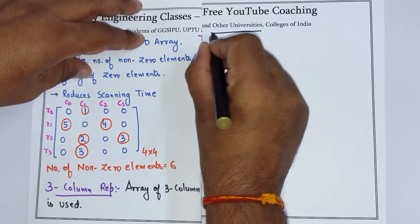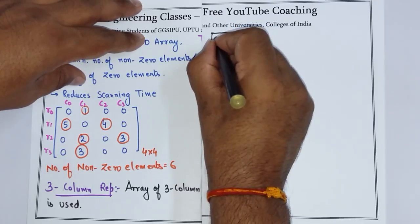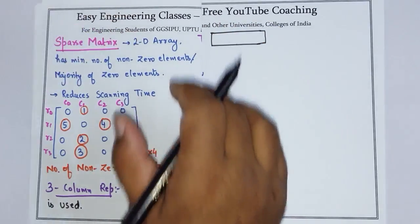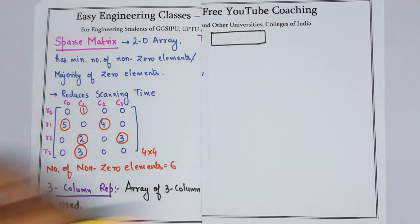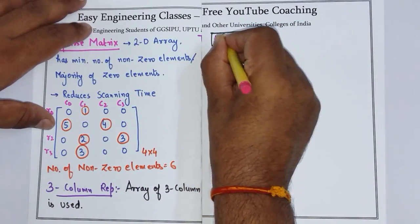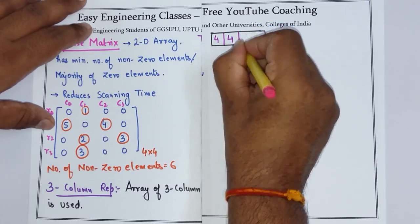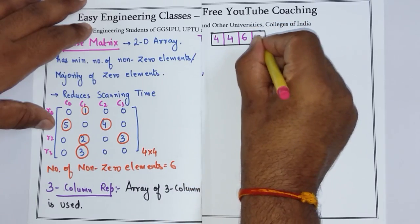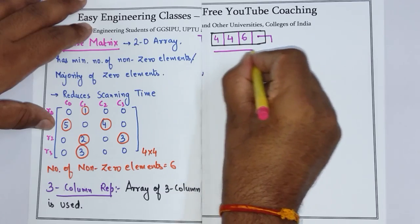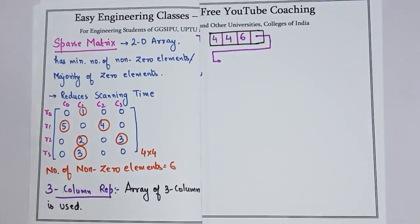What will we have to do with the head node? The head node will contain the total number of rows. We have 4 rows, so we will write 4. Total number of columns are 4, so we will write 4. Total number of nonzero elements is 6. And then this pointer will point to the first row of the sparse matrix.